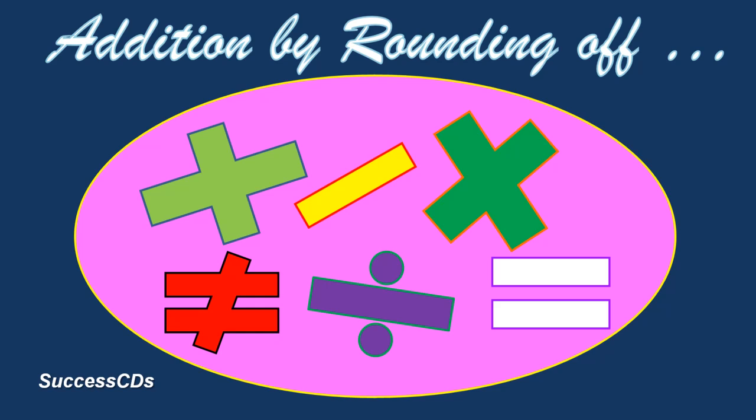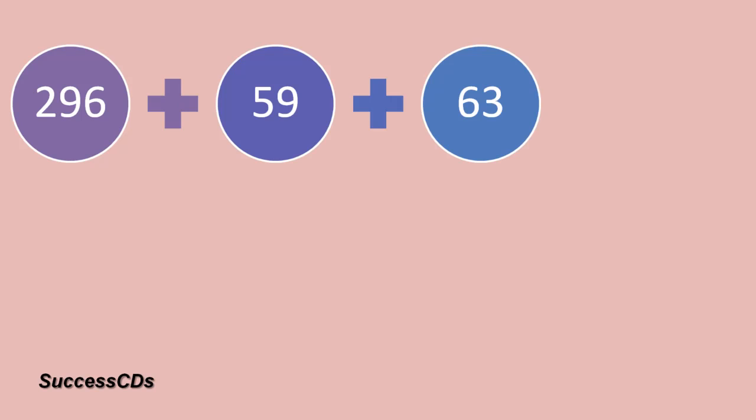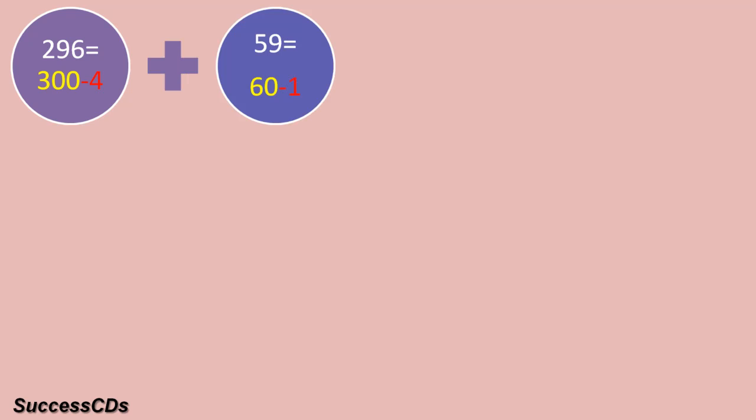Addition by rounding off — you round off the ones place number. Here is an example: 296 plus 59 plus 63. You have to add up these three numbers. You can write 296 as 300 minus 4, 59 as 60 minus 1, and 63 as 60 plus 3. You have rounded them off to the nearest 10.